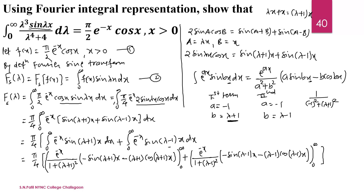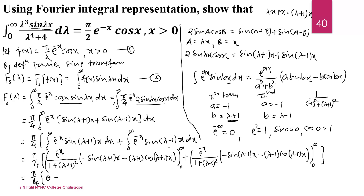Now applying the limits: at the upper limit, x → ∞, we know e^(−∞) = 0, so the entire upper-limit term is 0. At the lower limit, x = 0: e^0 = 1, sin(0) = 0, and cos(0) = 1. So the lower limit of the first term gives 1/(1+(λ+1)²) · [0 − (λ+1)·1] = −(λ+1)/(1+(λ+1)²).